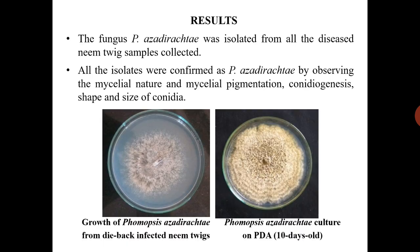Results. The fungus Fomopsis azadiractae was isolated from all the diseased neem twig samples collected. All the isolates were confirmed as Fomopsis azadiractae by observing the mycelial nature and mycelial pigmentation, conidiogenesis, shape and size of conidia. Fomopsis azadiractae produces two types of conidia, that is alpha and beta conidia.